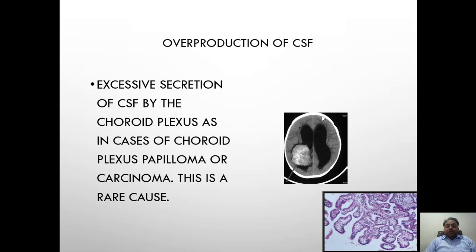The number one top cause of communicating hydrocephalus is overproduction of CSF. CSF is overproduced in the case of choroid plexus papilloma. Choroid plexus papilloma is present within the ventricles and leads to increased CSF production. Increased CSF production is shown here as hydrocephalus on the CT scan, leading to dilated and enlarged ventricles. This is the body of the lateral ventricle.